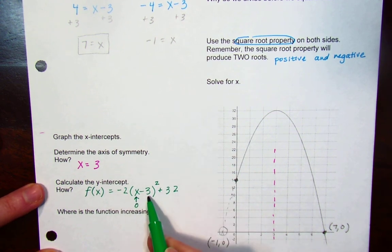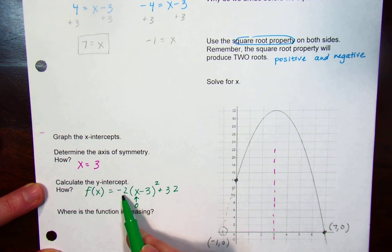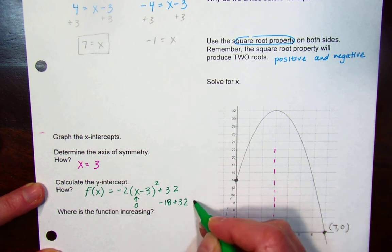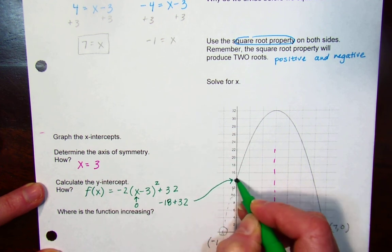0 minus 3 is negative 3. Negative 3 times itself is 9. Times negative 2 is negative 18. And negative 18 plus 32 is 14, which I could have seen from the diagram anyways.